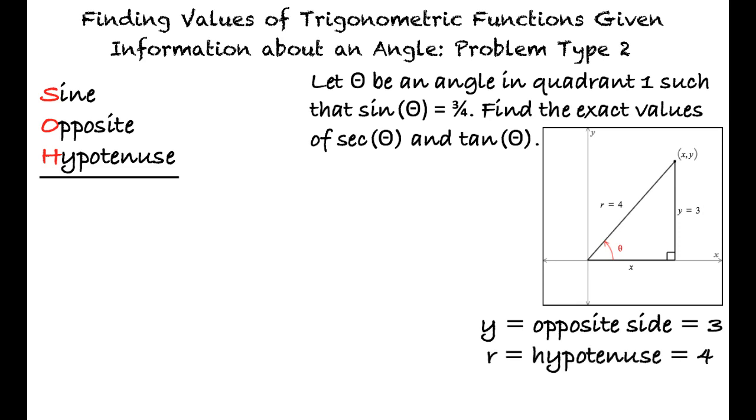Since we are given that the angle is in quadrant 1, we know the values of r and y and need to use the Pythagorean theorem to solve for x, the adjacent side, right? That's right.